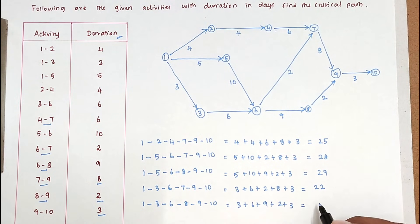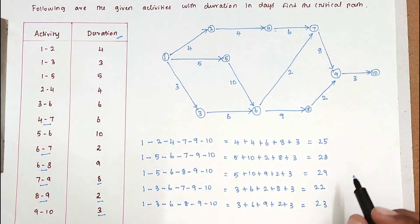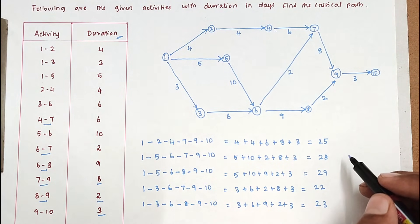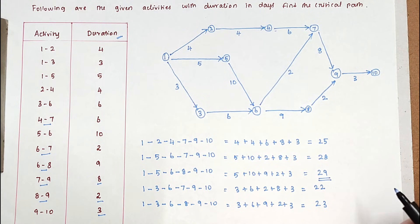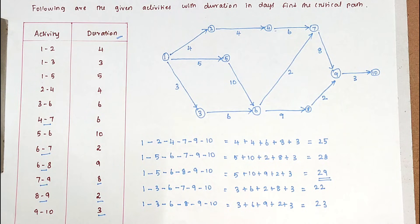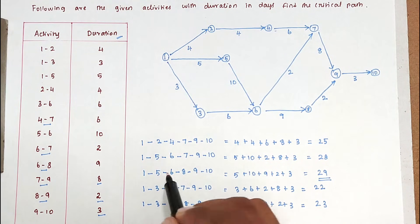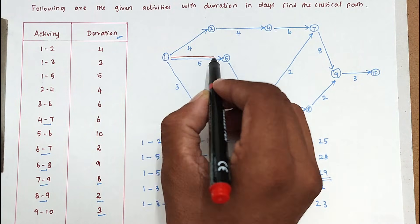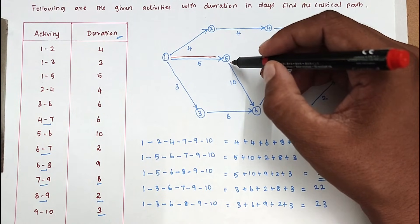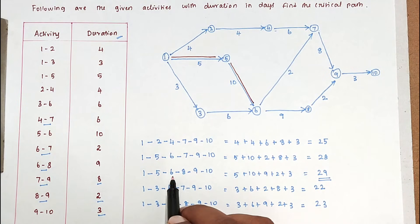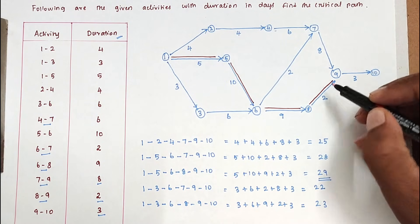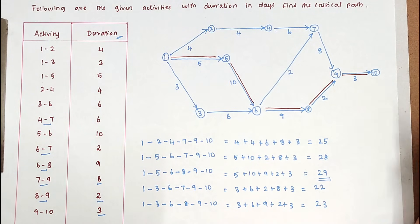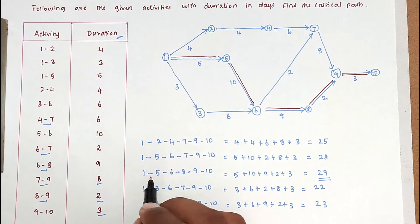As stated earlier, the maximum duration path is the critical path. The maximum value is 29, so that is the critical duration. The critical path is 1-5-6-8-9-10. We mark it with a double line on the network diagram: 1→5, then 5→6, then 6→8, then 8→9, then 9→10.